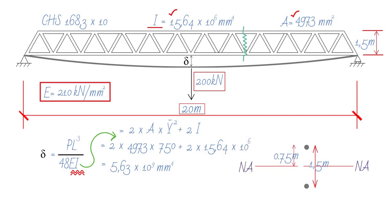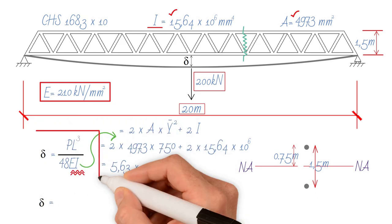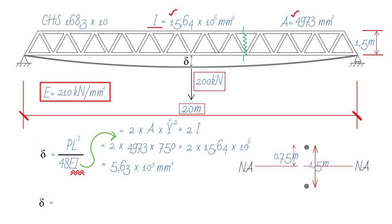As previously stated, the deflection for a concentrated load is equal to PL cubed over 48 EI. We will be using kilonewton and millimeter. So 200 kilonewtons times 20 meters, we need to convert that to millimeters to the power of 3, divided by 48